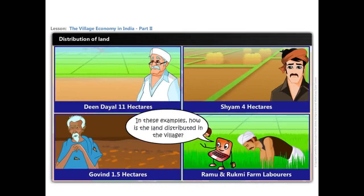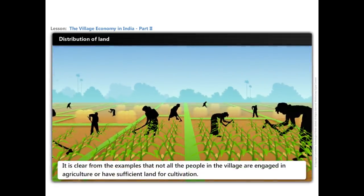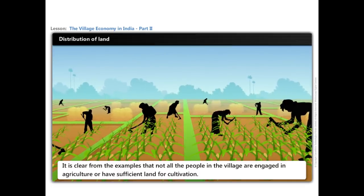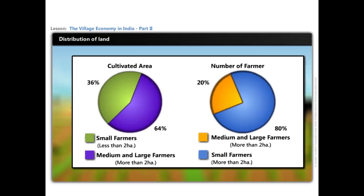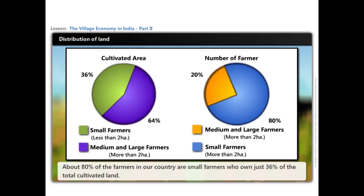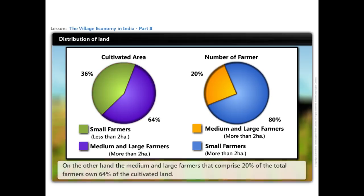In these examples, how is the land distributed in the village? It is clear that not all the people in the village are engaged in agriculture or have sufficient land for cultivation. Have a look at the pie chart to know the overall pattern in our country. About 80% of the farmers in our country are small farmers who own just about 36% of the total cultivated land. On the other hand, the medium and large farmers that comprise 20% of the total farmers own 64% of the cultivated land.